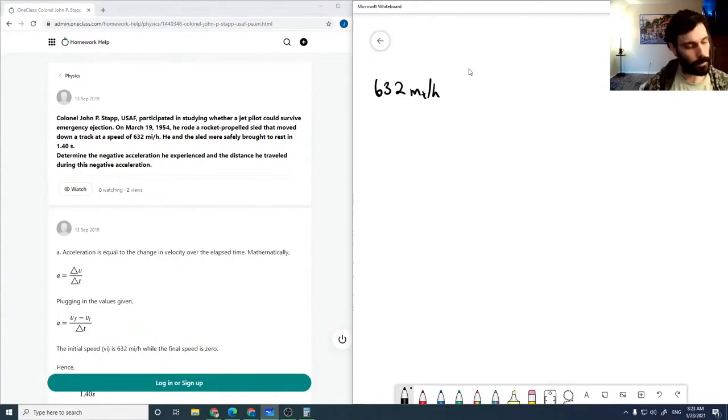First, I'm going to convert this into meters per second. A mile is 1.60934 kilometers, so 632 miles per hour is 1017.10288 kilometers per hour.